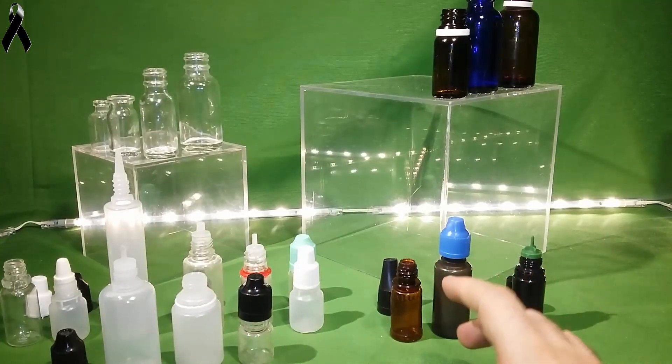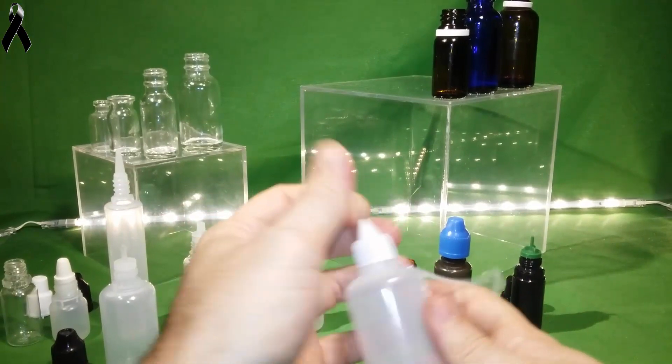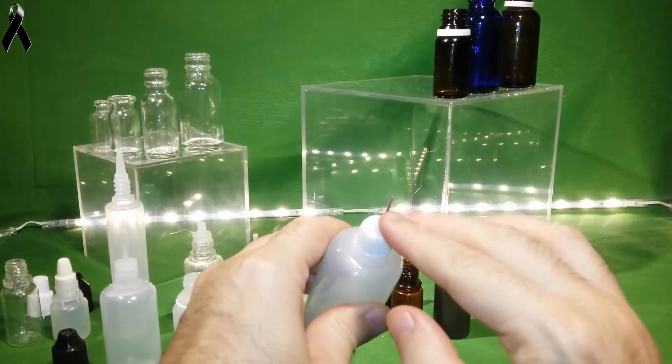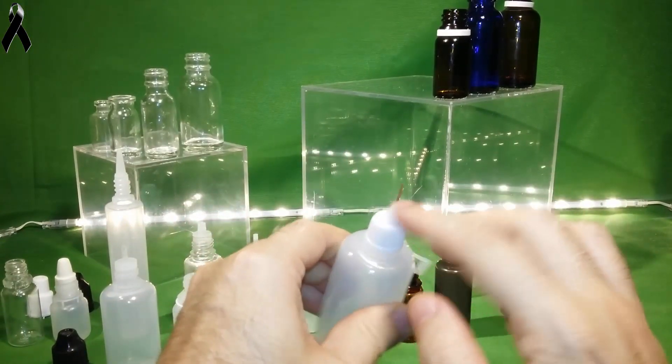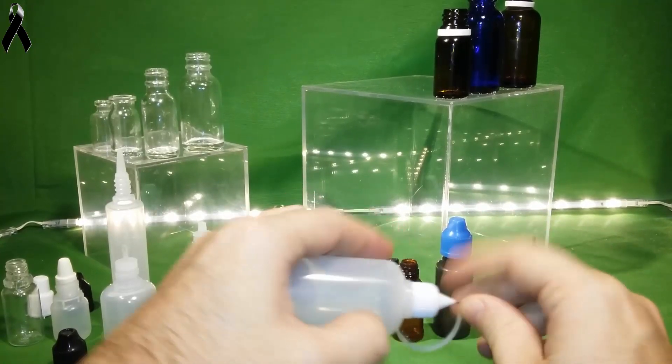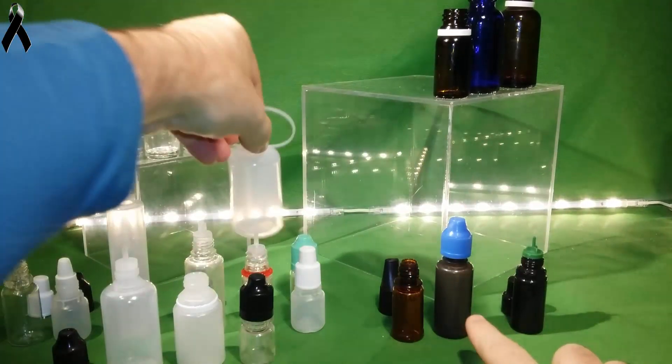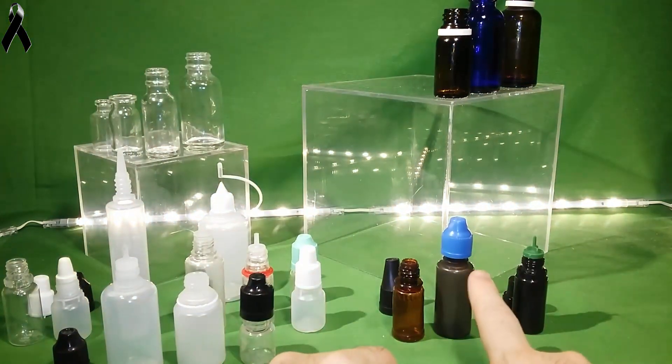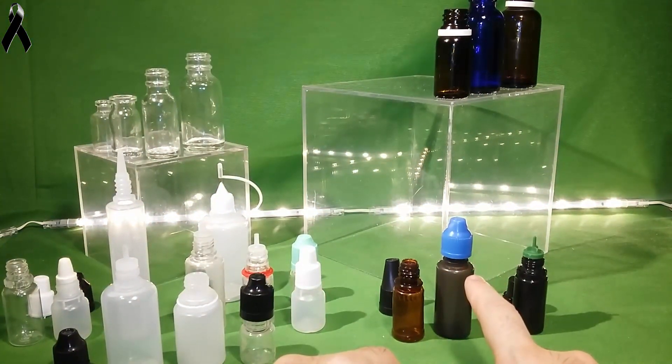Se me olvidaba, estos también vienen muy bien, los de pico de pato, estos para rellenar atomizadores, ¿vale? Entonces estamos distinguiendo entre este tipo de botes y este tipo de botes. A mayor oscuridad, menor luz les da, por tanto el líquido aguanta bastante más.